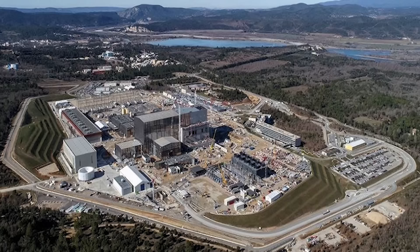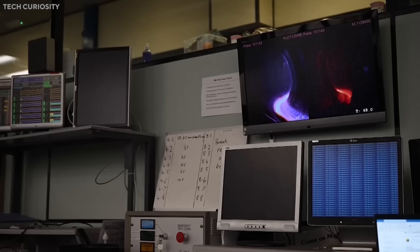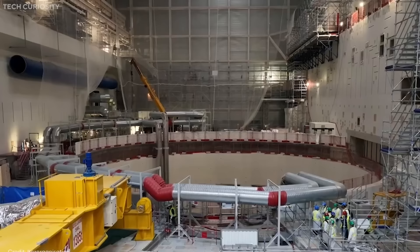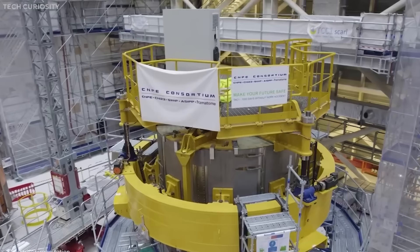The ITER project is being built in Saint-Paul-lès-Durance, France, next to the Cadarache facility, one of the largest nuclear research centers in Europe. The construction of the ITER site began in 2010, after decades of negotiations and preparations.